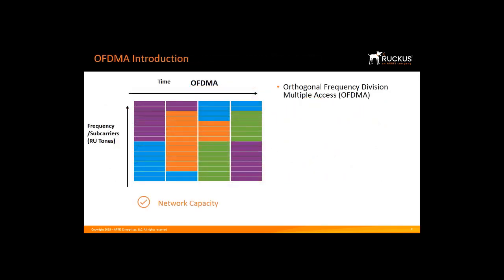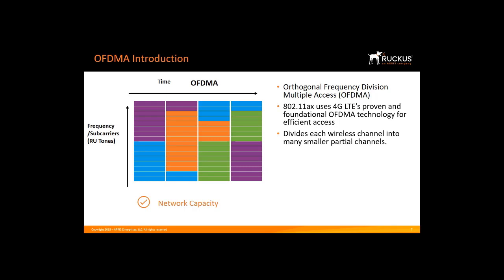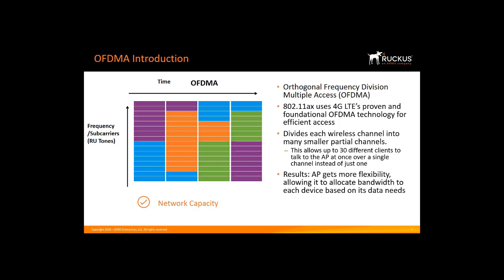Perhaps the biggest change is a feature called Orthogonal Frequency Division Multiple Access, or OFDMA. 802.11ax uses 4G LTE's proven and foundational OFDMA technology for efficient access. This OFDMA technology allows multiple users with varying bandwidth needs to be served simultaneously. It chops up each wireless channel into many smaller partial channels, allowing up to 30 different clients to talk to the AP at once over a single channel instead of just one. The AP gets more flexibility, allowing it to allocate bandwidth to each device based on its data needs, which helps to increase overall network performance.